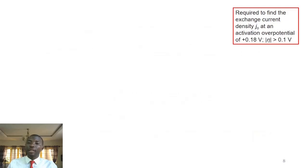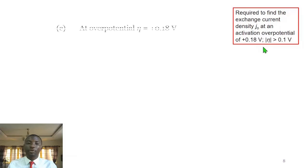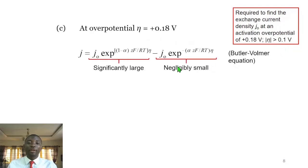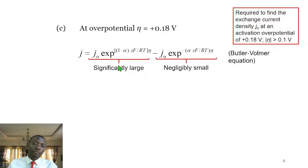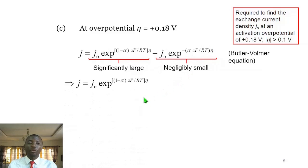The next part asks us to find the exchange current density at an activation overpotential of 0.18 volts. At this value, the absolute value is greater than 0.1 volt, so we use the complete Butler-Volmer equation but approximate it using the Tafel approximation. At this high overpotential limit, one exponential term is significantly large while the other is very small, so we ignore the smaller term, leaving the Tafel expression.